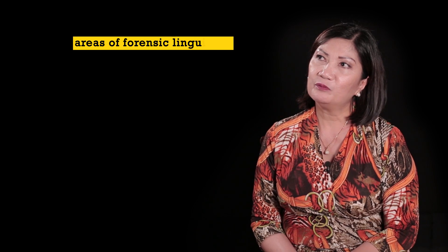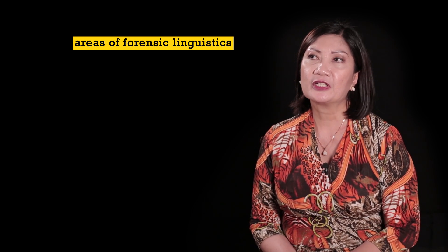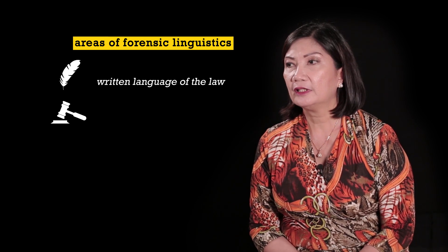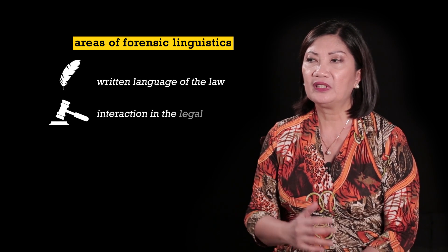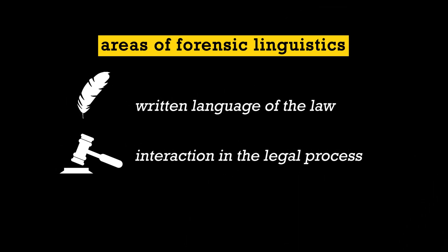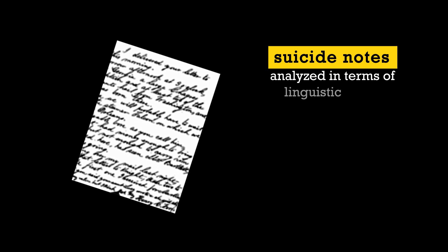You can divide Forensic Linguistics into three areas. The first one is the written language of the law. The second one has something to do with interaction in the legal process. And the third area deals with the description of the work of the Forensic Linguist acting as an expert witness. Suicide notes, for example, could be analyzed in terms of linguistic features.